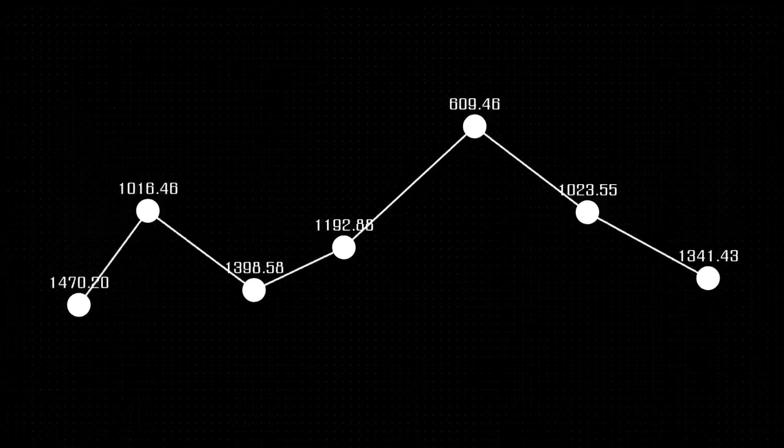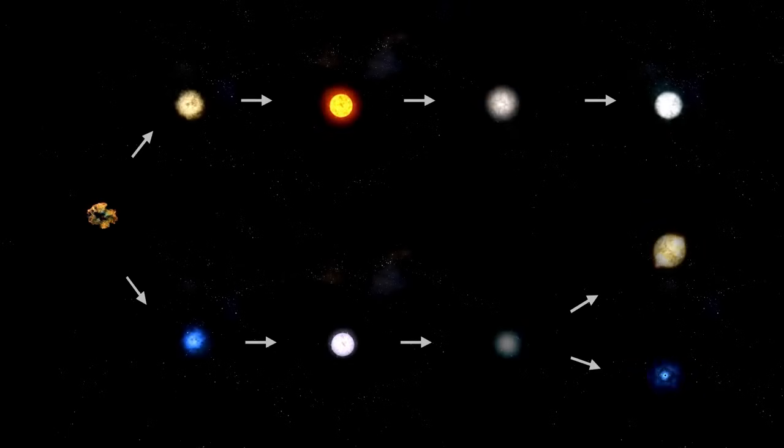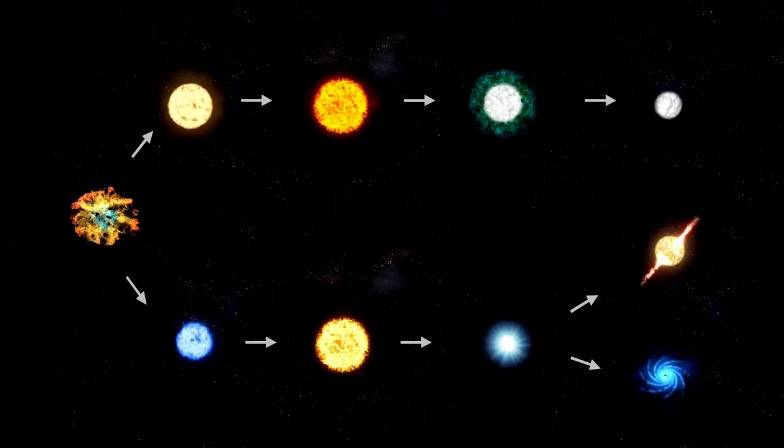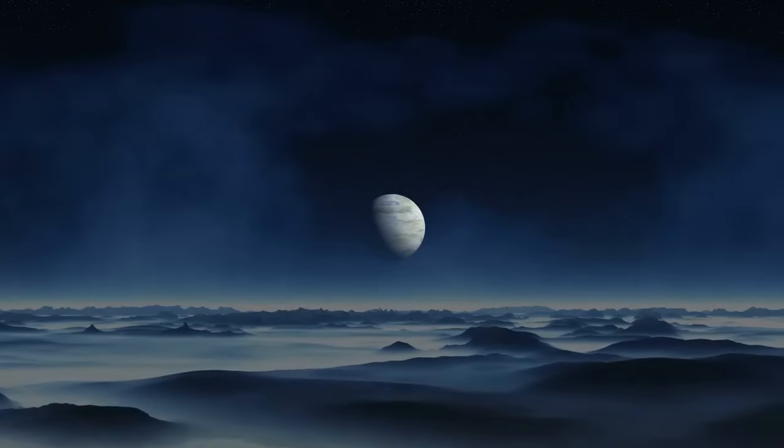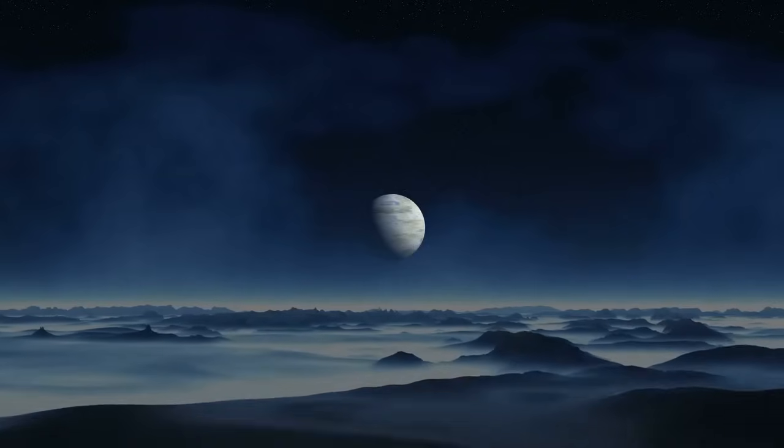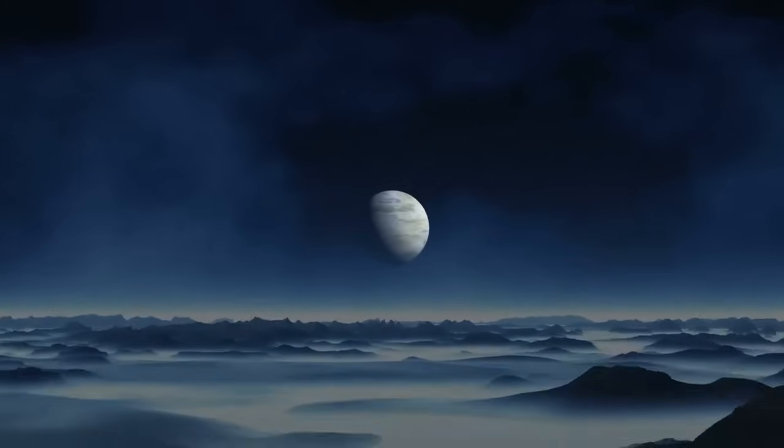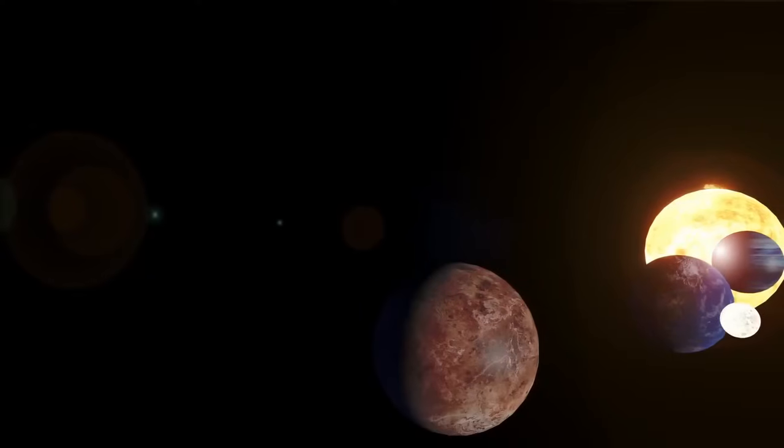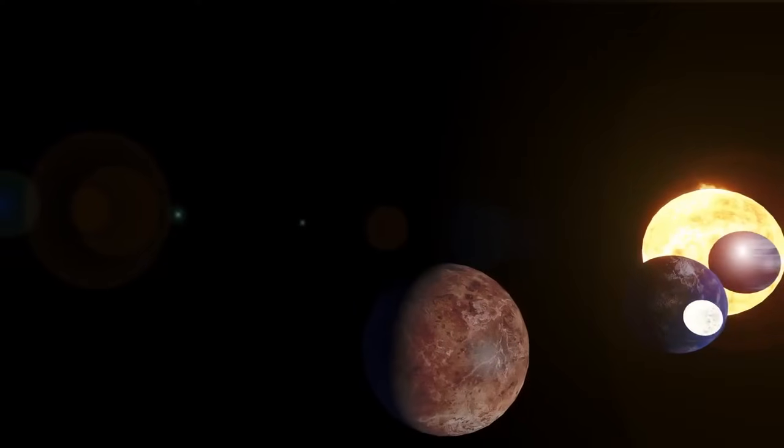Betelgeuse's magnetic field is believed to be thousands of times stronger than that of the sun. This intense magnetic field causes the gas on the surface of the star to be trapped in loops or arcs, describing regions of intense magnetic activity that are visible as star spots.